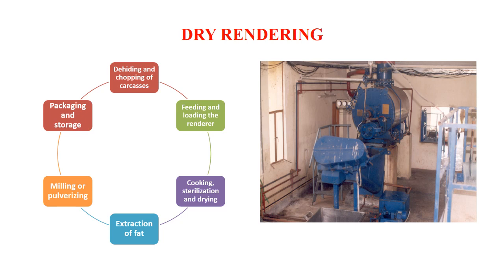In dry rendering, steam is applied in the outer chamber while the material goes into the inner chamber. Indirect heating causes cooking and melting of fat. When steam generates and increases pressure, the temperature increases, causing sterilization. After sterilization, steaming is stopped and pressure is reduced. A valve is opened for the steam and moisture to escape, passing through a jet condenser where steam becomes liquid and exits with water. After this drying process, there is milling or grinding and then packaging.